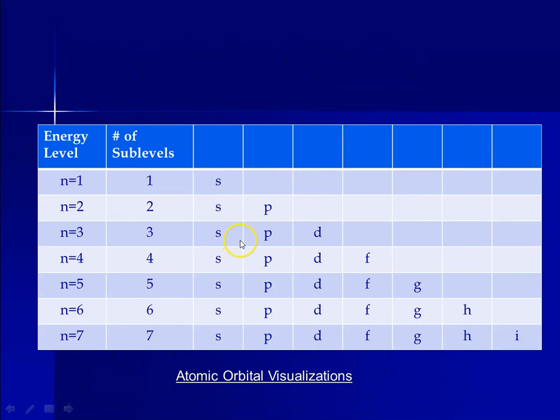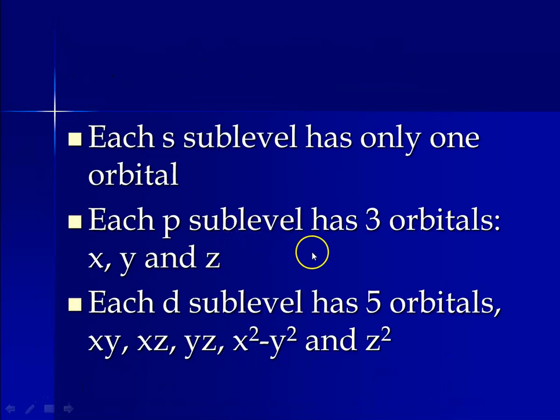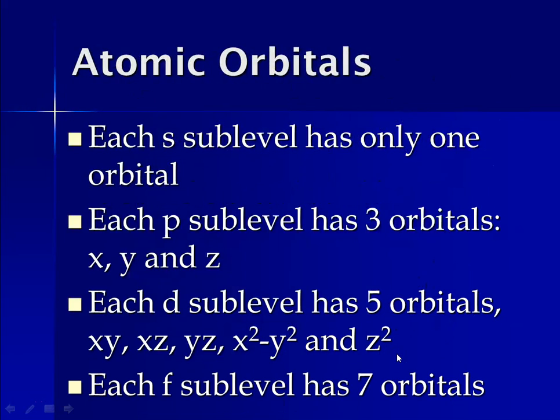Each d sublevel has five orbitals. That's like the d sublevel has five bedrooms. They have these funny names: xy, xz, yz, x squared minus y squared, and z squared. Finally, the f sublevel has seven orbitals. I'm not even going to get into how complex those are.